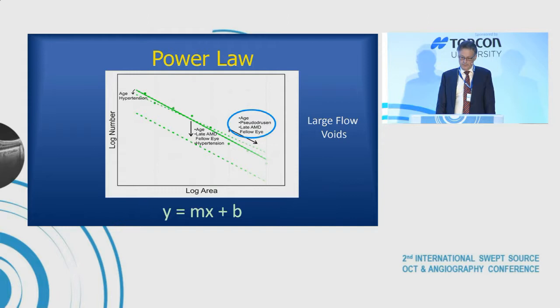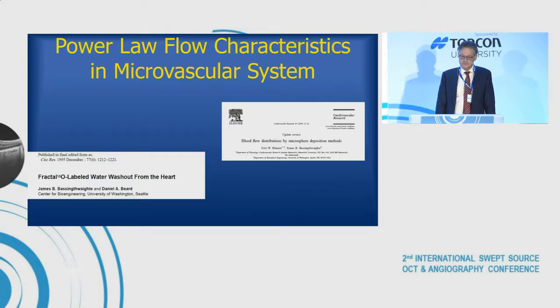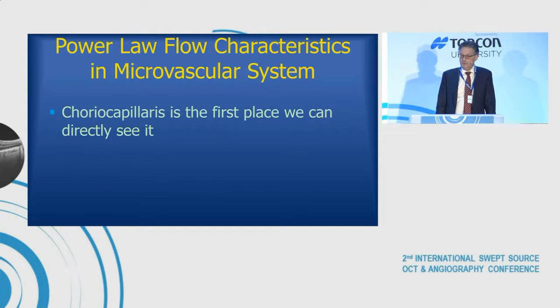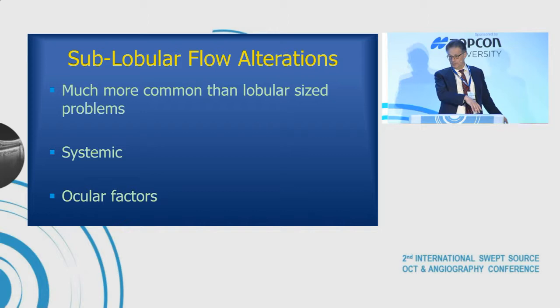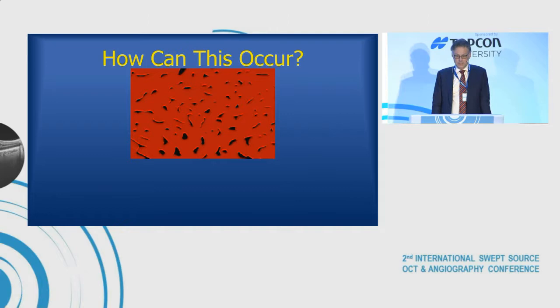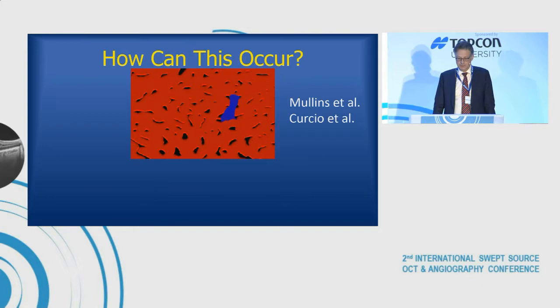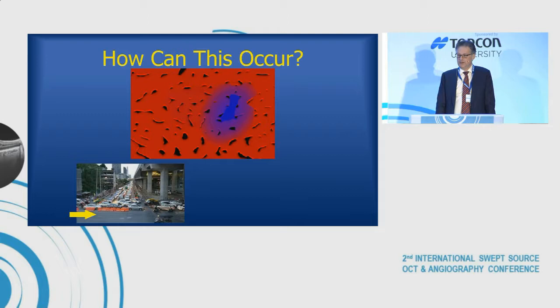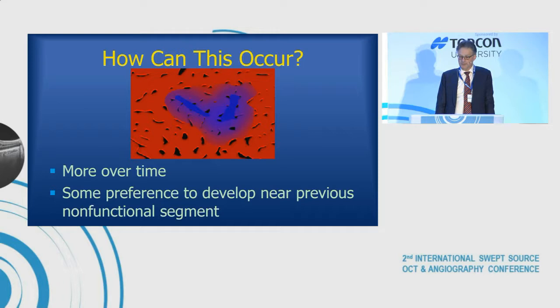These power law characteristics have been found in microvascular flow in other systems, but previously researchers had to kill the animal after giving nanoparticles to see where they got occluded. This is the first time we can see this kind of flow pattern in living subjects by looking at the choriocapillaris. All of these things are smaller than a lobule — we used to think about lobular flow, but sub-lobular flow problems are much more common and are related to systemic and ocular factors. Choriocapillaris segment occlusions are fairly common and decrease flow around them, much like traffic blockage causes a bigger jam than just at the occlusion site.